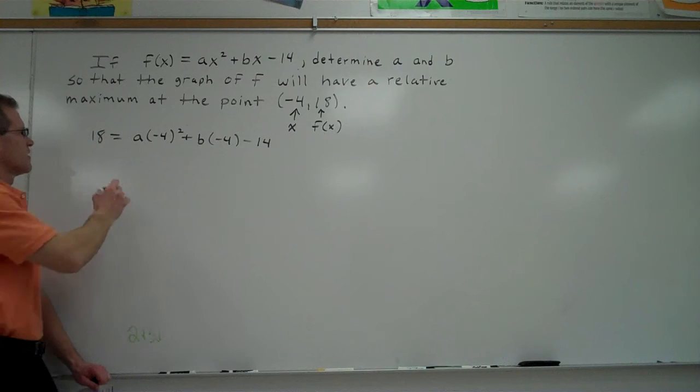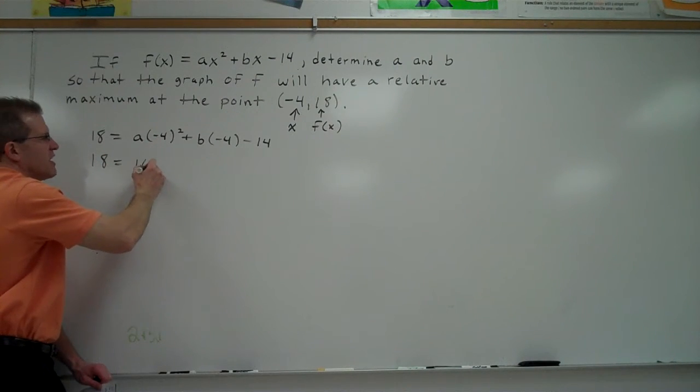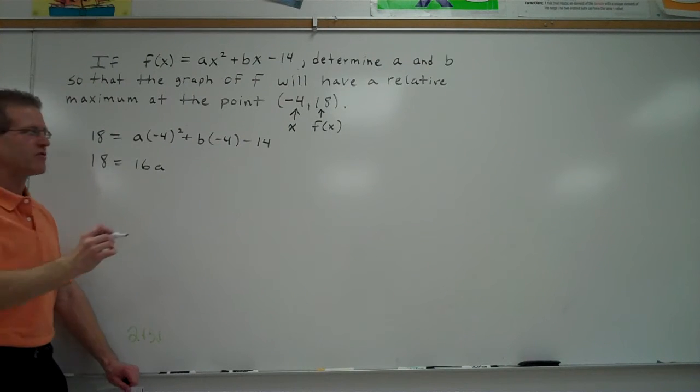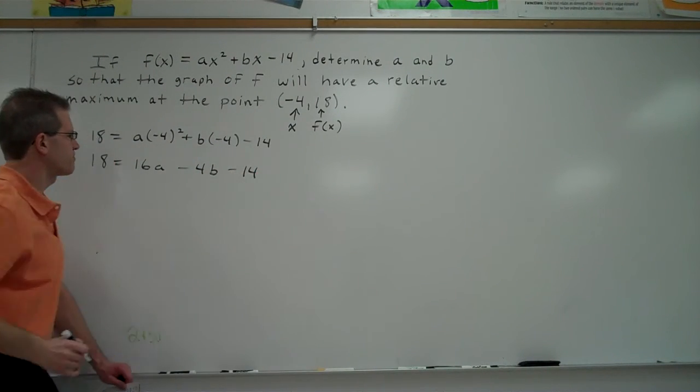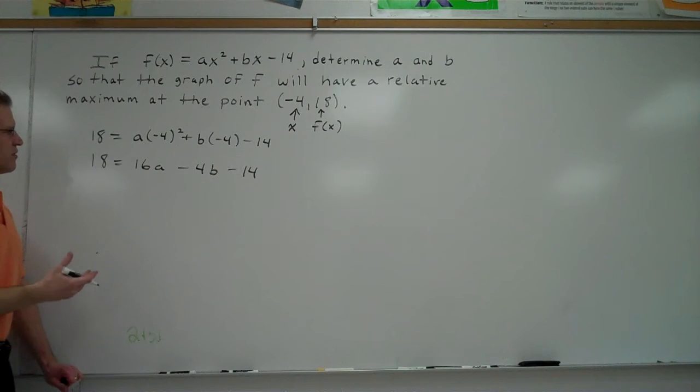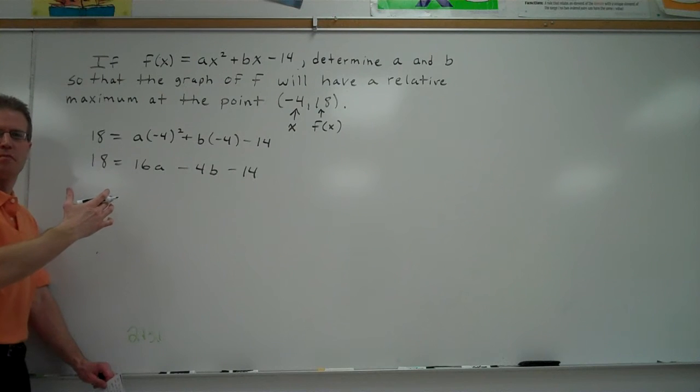Let's go ahead and simplify that a little bit. 18 equals, this would be a times 16, so 16a, plus negative 4 times b, so that would be minus 4b, minus 14. We're supposed to try to find a and b. Do you think there's any way we can figure out a and b with just having one equation? No. When you have two variables to solve for, you normally need two equations. So we need to come up with another equation.